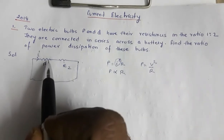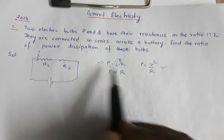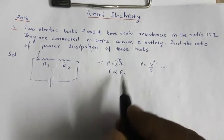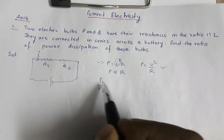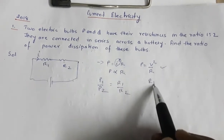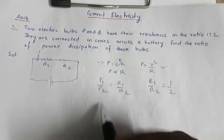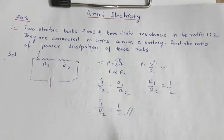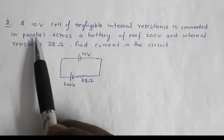If resistors are in parallel, potential will be the same and we use P = V²/R. But here since the resistors are in series, we use P = I²R. So P is directly proportional to R, giving P1/P2 = R1/R2. In the question, R1/R2 = 1:2, so the power ratio is also 1:2. This is the final answer.